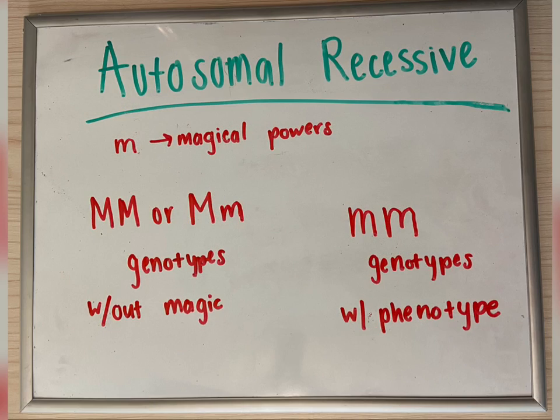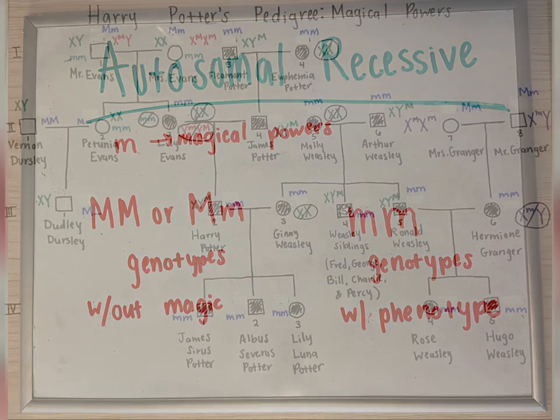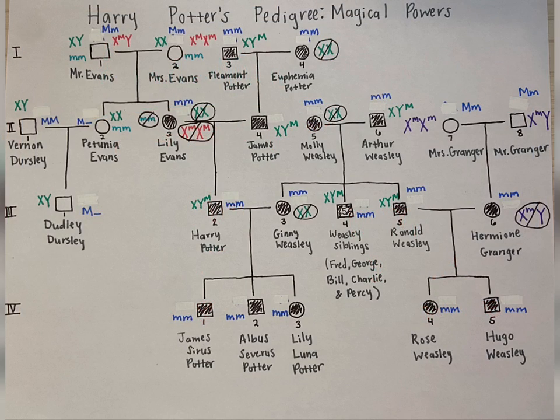Next, looking at an autosomal recessive mode of inheritance, the gene would be found on a non-sex chromosome and would be hidden when crossed. Thus, magical powers are denoted with little m, little m. Starting at generation 1 and working down through generation 4, the genotypes are consistent with this mode of inheritance for each individual.